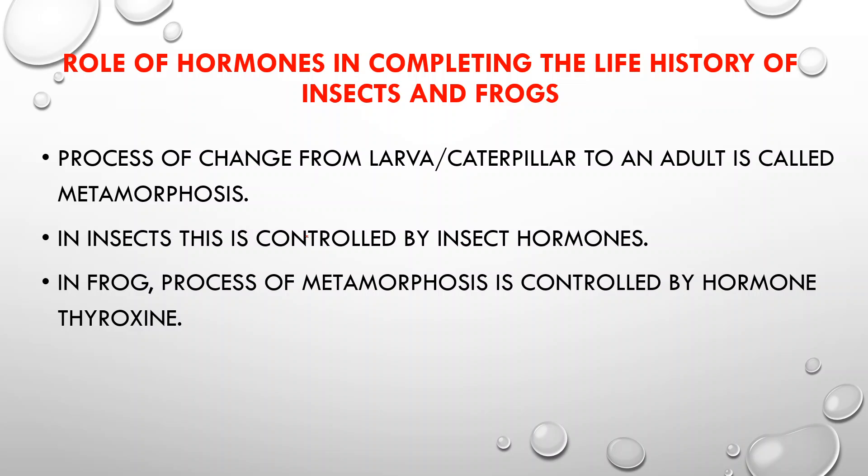In insects, the process of metamorphosis is controlled by insect hormones. In frogs, the process of metamorphosis is controlled by the hormone known as thyroxine, which is produced by the thyroid gland. For thyroxine production, sufficient iodine must be present in the water so that tadpoles can grow properly.